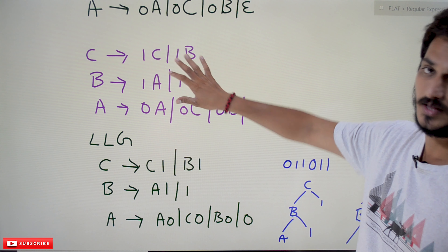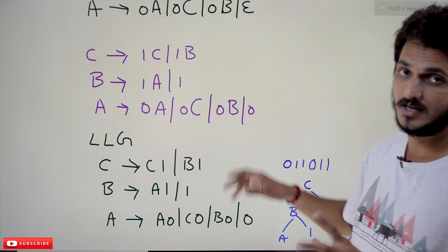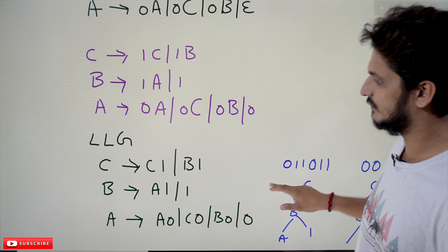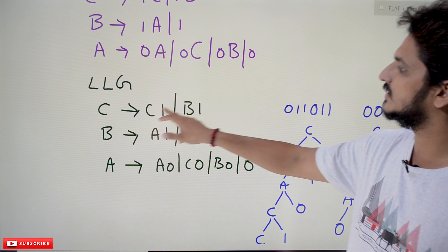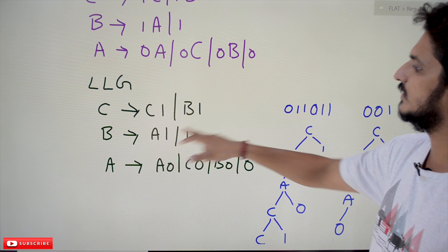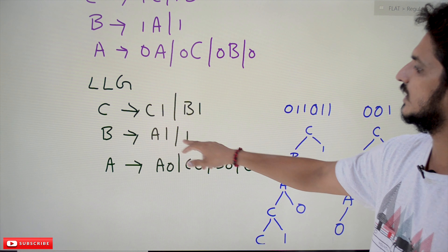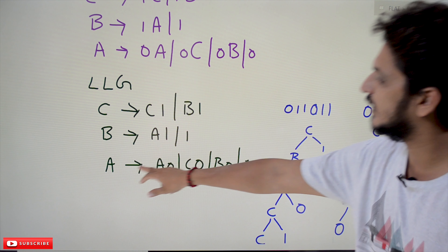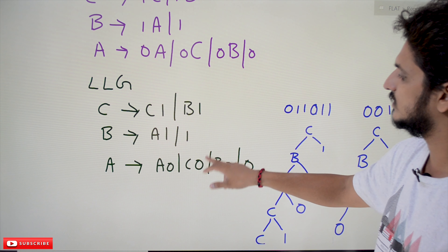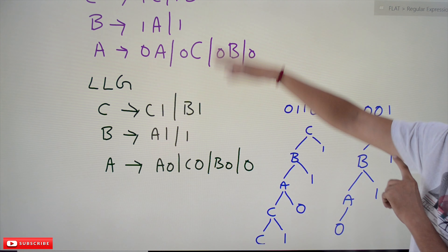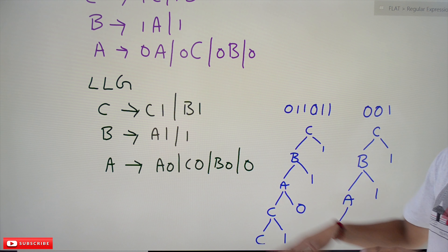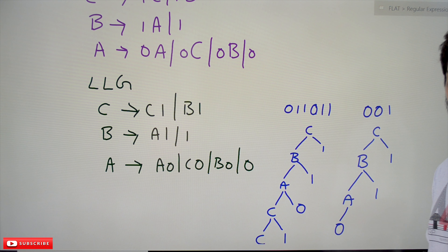Now reverse this grammar to get the final left linear grammar. Reversing: C → C1 or B1; B → A1 or A1; A → A0 or C0 or B0 or 0. Just reverse this grammar.